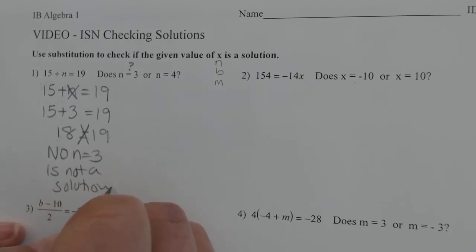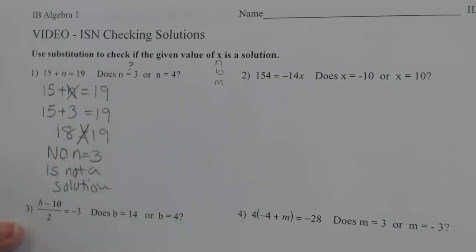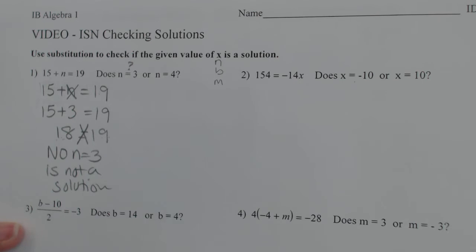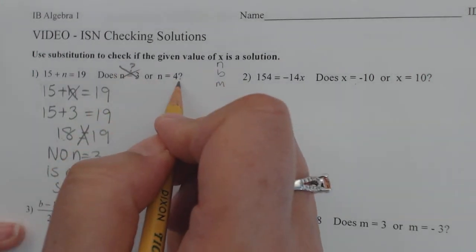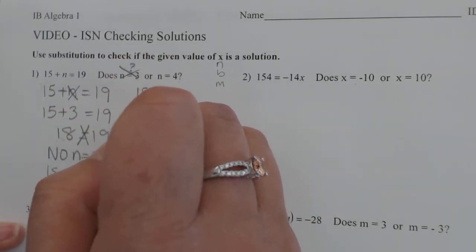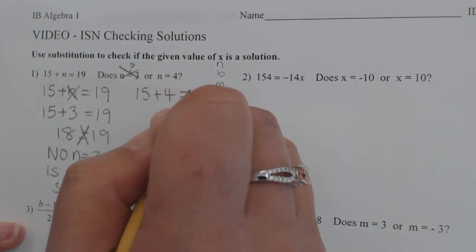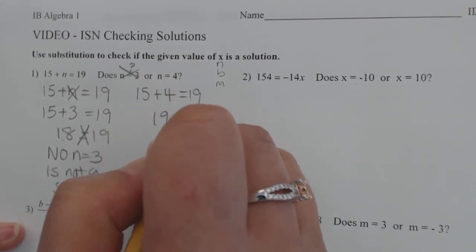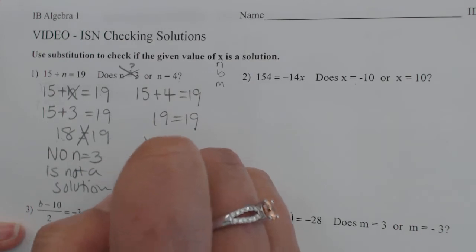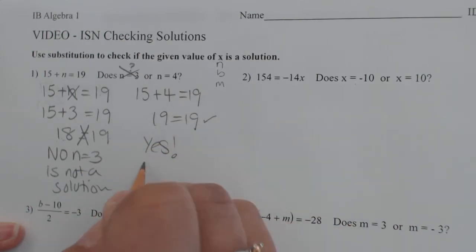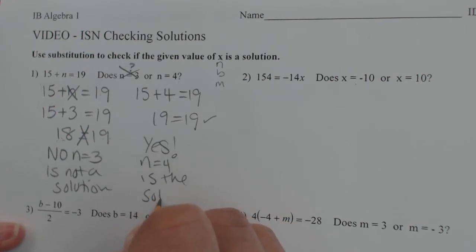Because it needs to be balanced. These two have to be the same number on each side of the equal sign. So that's out. Let's make sure n equals 4 works. So 15 plus, let's replace the n with 4 equals 19. 19 does equal 19. So yes, n equals 4 is the solution. And this is what we're going to do for the remaining 3.